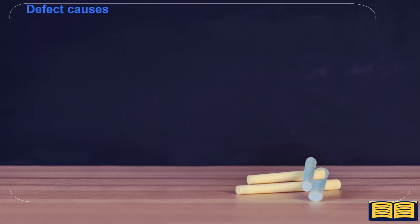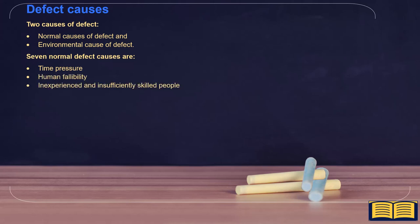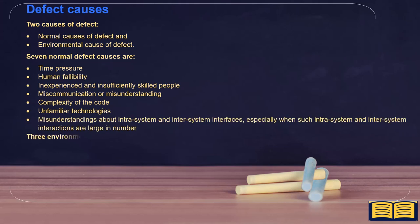We covered defect causes, where we saw two categories. The six normal causes of defects are: time pressure, human fallibility, inexperienced and insufficiently skilled people, miscommunication or misunderstanding, the complexity of the code, and unfamiliar technologies. The three environmental causes of defects are: radiation, electromagnetic field, and pollution.